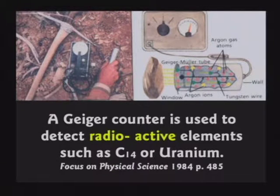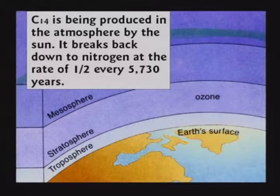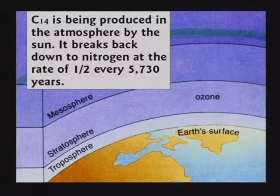Carbon-14 is very rare and it doesn't stay stable because it's always breaking apart — you can hear it with a Geiger counter, just like uranium. It breaks apart and turns back into nitrogen, disappearing as a gas into the air. Carbon-14 is produced in the atmosphere by the sun and breaks down at about half of it decaying every 5,730 years. This is called the half-life.